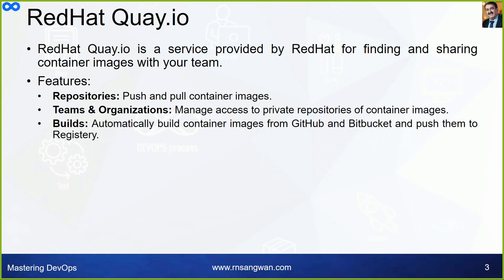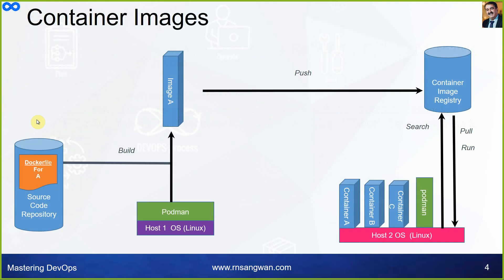Red Hat quay.io is a service provided by Red Hat for finding and sharing container images. Oracle also has its own registry, but that is private. Quay.io gives you both public and private options. Features include repositories to push and pull images, teams and organizations to manage access, and automatic builds from GitHub or Bitbucket.